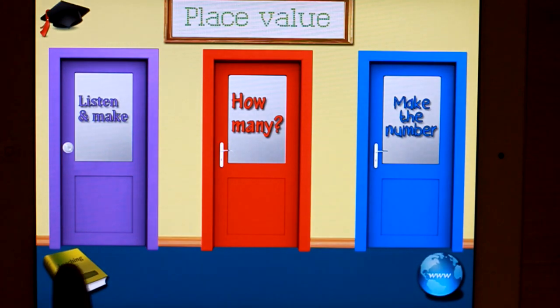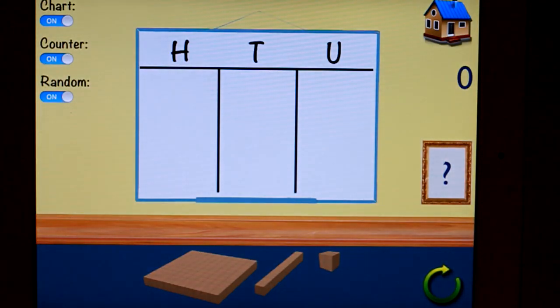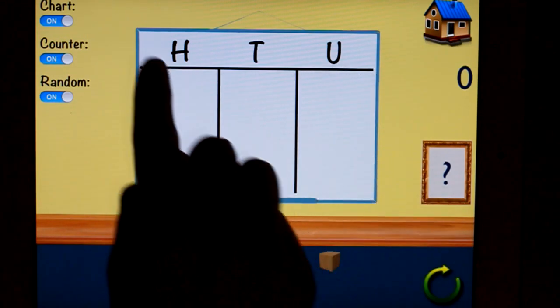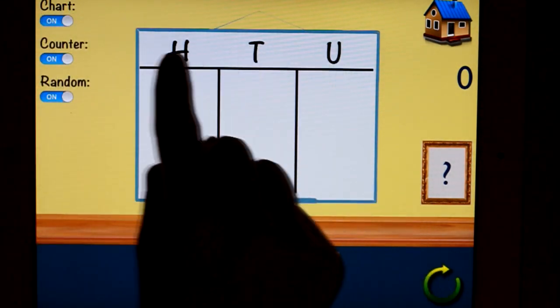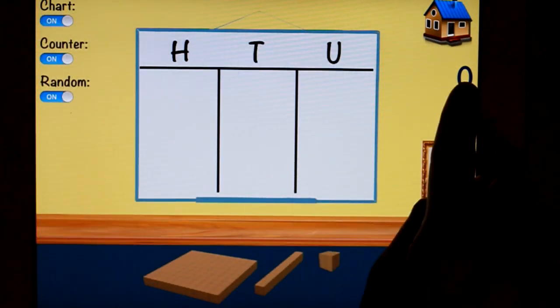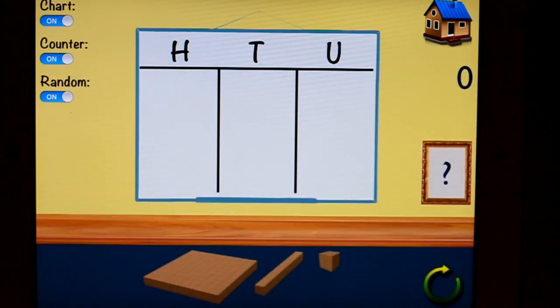So first of all, it's called Place Value, we've got a teaching tool. I've turned off the noises here, just for my sanity. You might like to do so. Okay, so we've got hundreds, tens, and units, or hundreds, tens, and ones. You can turn off the chart if you are not interested in using that terminology yet, and you can of course turn off the counter, you'll see what that does in a minute.